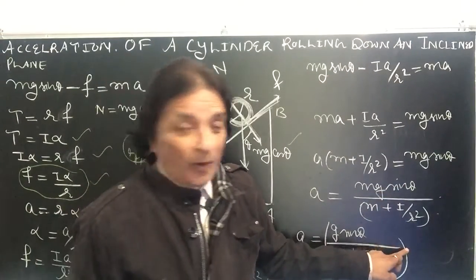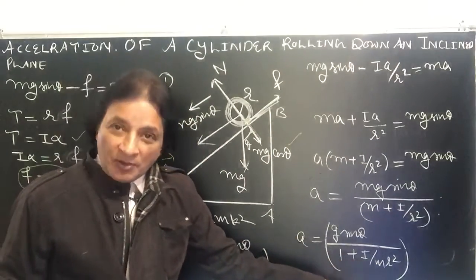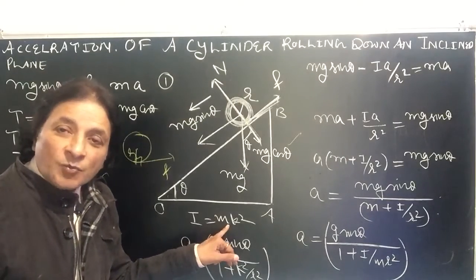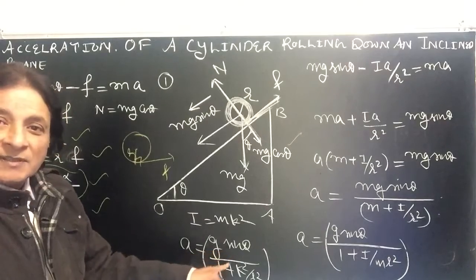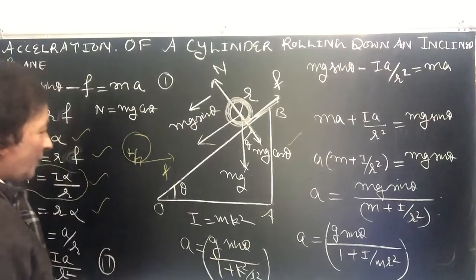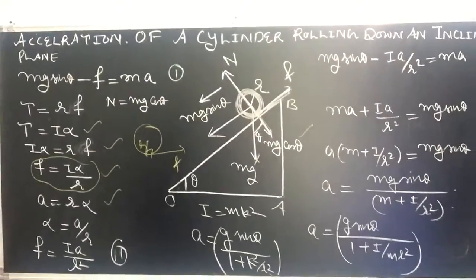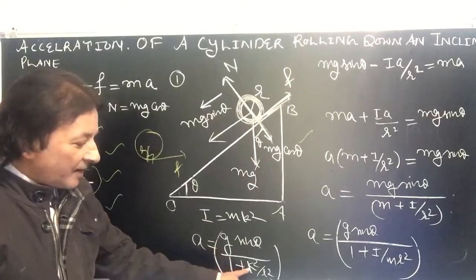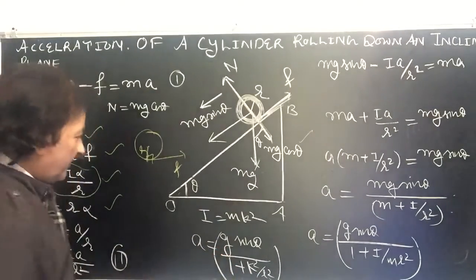This simplifies to a equals g sine theta upon (1 plus I upon m r squared). Now, since I equals m k squared, where k is the radius of gyration, a equals g sine theta upon (1 plus k squared upon r squared). This is the important result you must know.